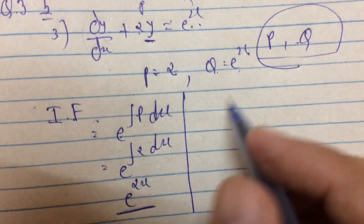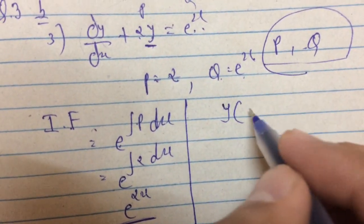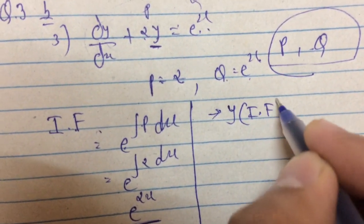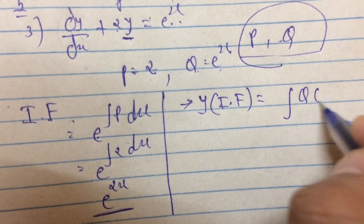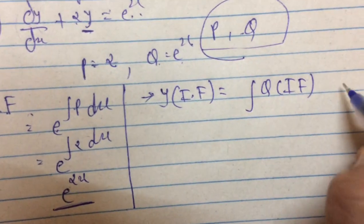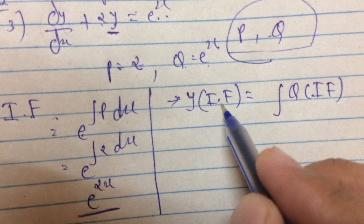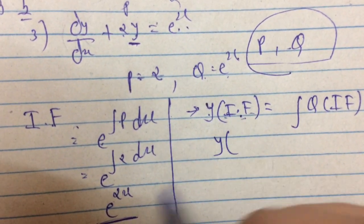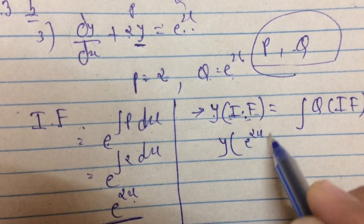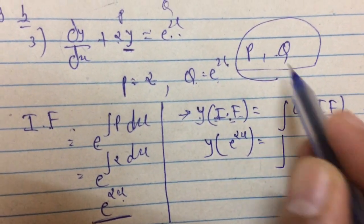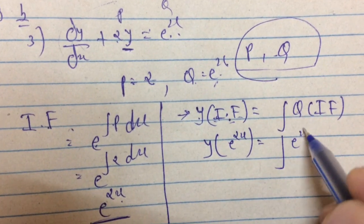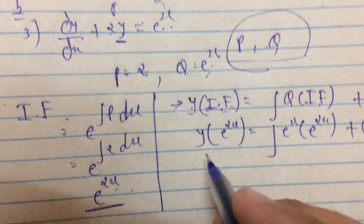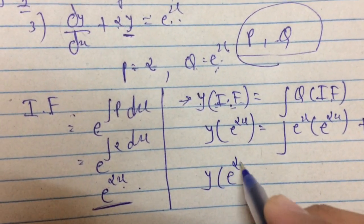Now for the final answer, the solution formula is y times IF equals the integration of Q times IF plus C. We substitute the values: Q equals e raised to x, IF equals e raised to 2x. We're already near the answer.